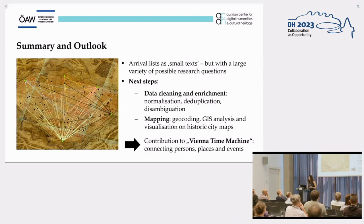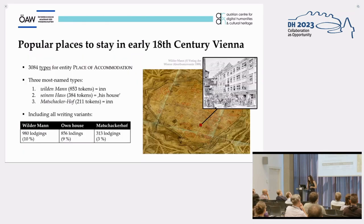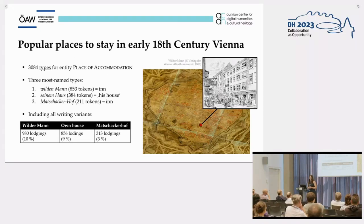For those staying in inns, the Wildermann — seen here on the right — is by far the most popular choice, named in 980 different items and accounting for 10% of all lodgings, a very high ratio. In comparison, in second place is the Matschakerhof, which accounts for only 313 stays, or 3% of all lodgings. So on the level of lodging choices, the arrival lists provide valuable insights into early modern Vienna.